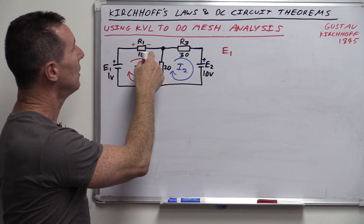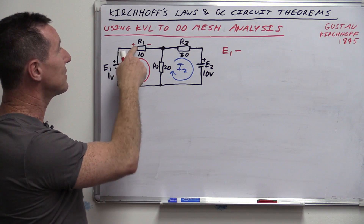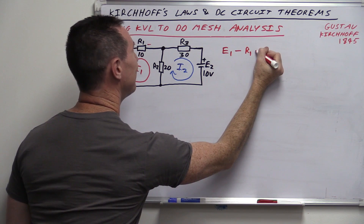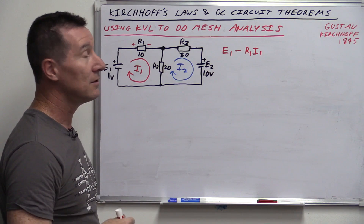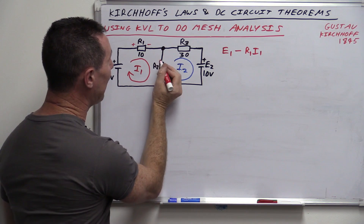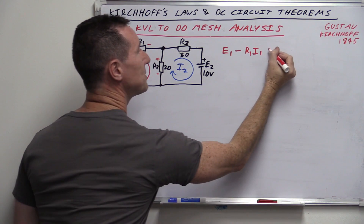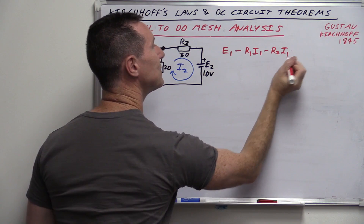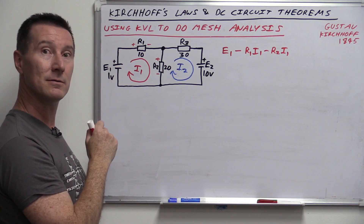Now we know our total current from E1. To calculate the current flowing down R2, we use the current divider equation: IR2A = IT × R3 / (R2 + R3). Plugging in the values: IR2A = 0.04545 × 30 / (20 + 30) = 0.02727 repeating amps. Then we do exactly the same thing for E2 — replace E1 with a short circuit and solve for IR2 again using the same process: calculate IT first, then apply the current divider. This gives IR2B = 0.09090 repeating amps.